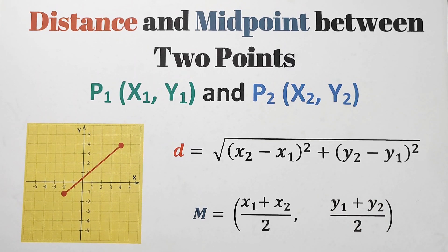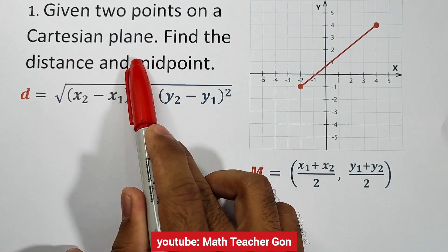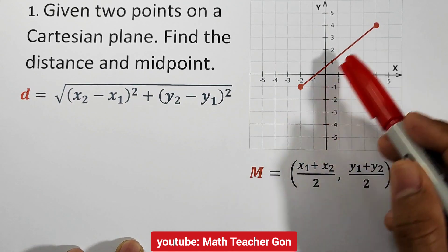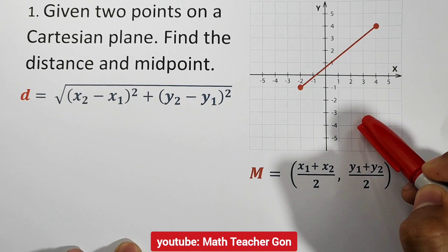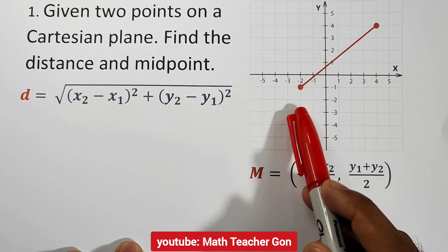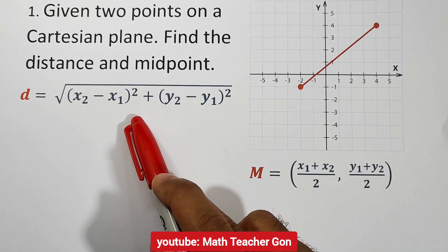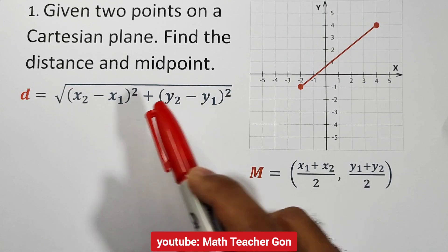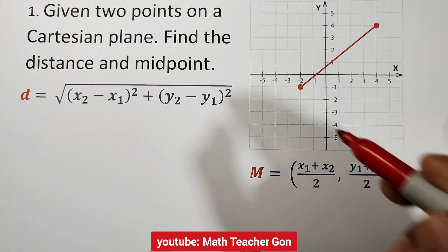Let us have example number 1. Given two points on a Cartesian plane, find the distance and midpoint. We have to find the distance between these two points using this formula, so let us identify the coordinates of these points.